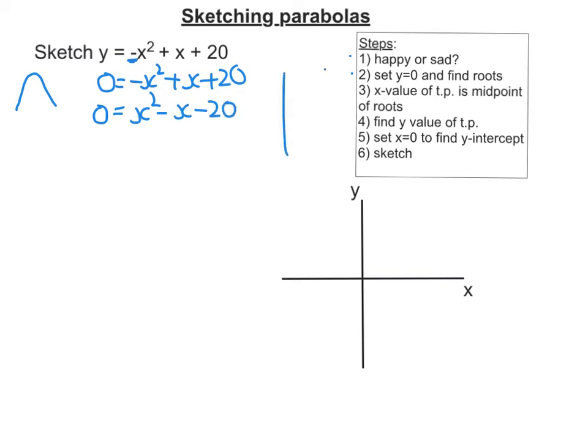Now I can look to factorize this. So let's get my grid out as before. So we're going to get in here x squared and minus 20. So I'm looking for two numbers that times together to get minus 20, but add to get negative 1.